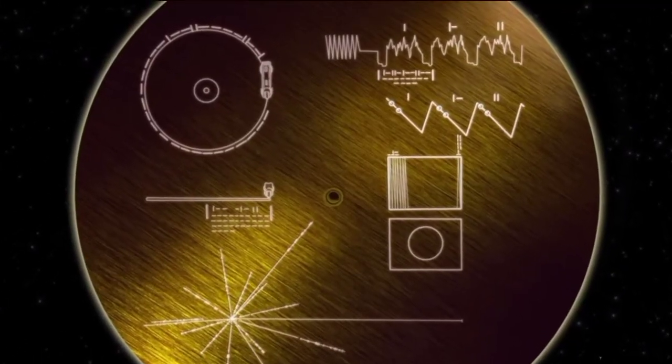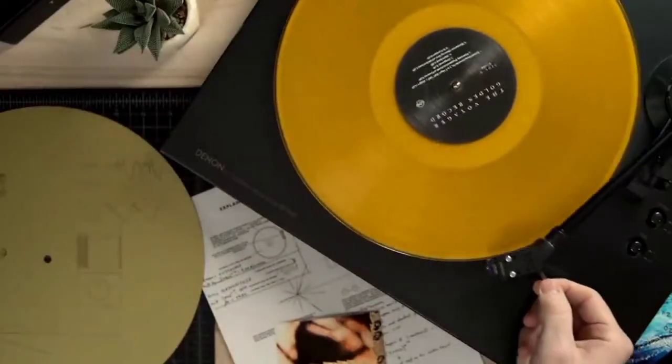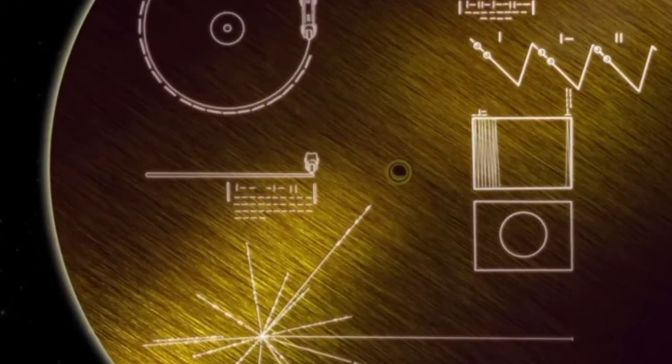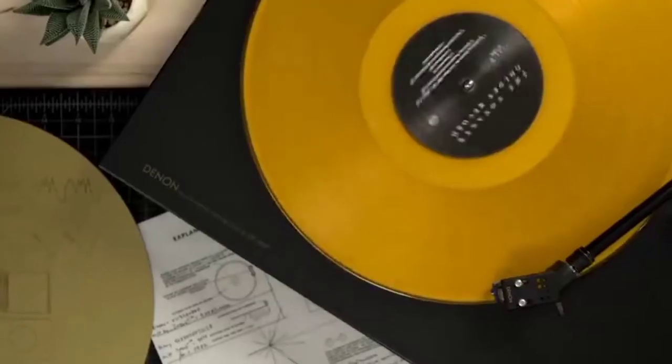The rest of the symbols are instructions on how to make the records work, assuming aliens don't have record players. The markings on this symbol are binary codes, which shows the speed the record should be turned at for it to work properly, which is about 3.6 seconds per rotation.